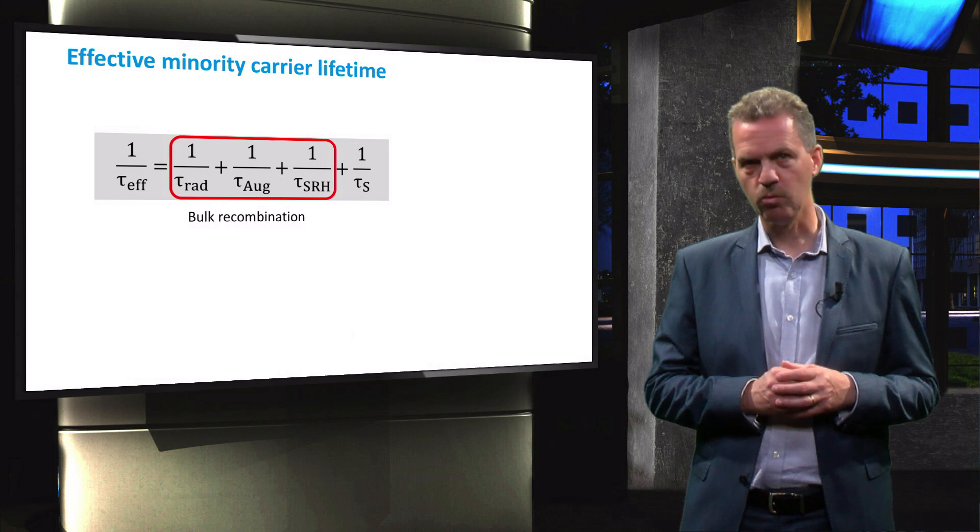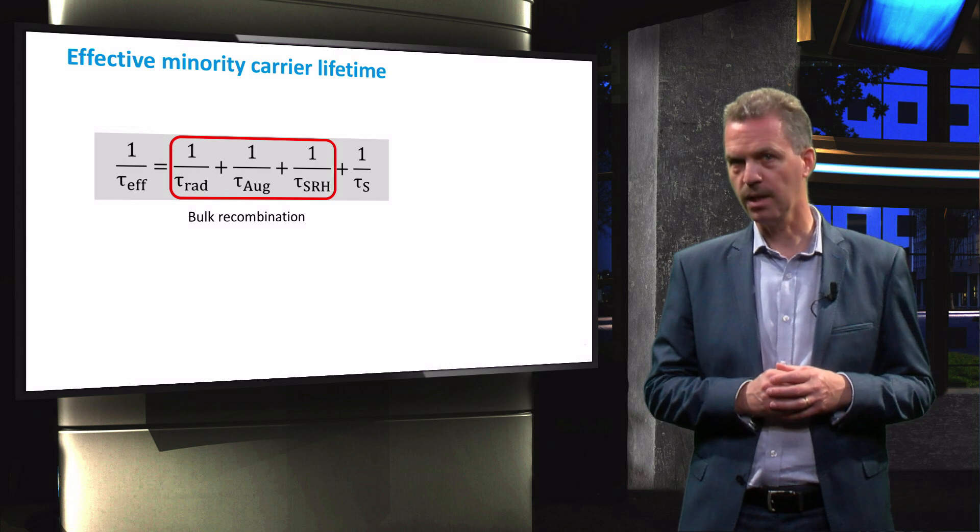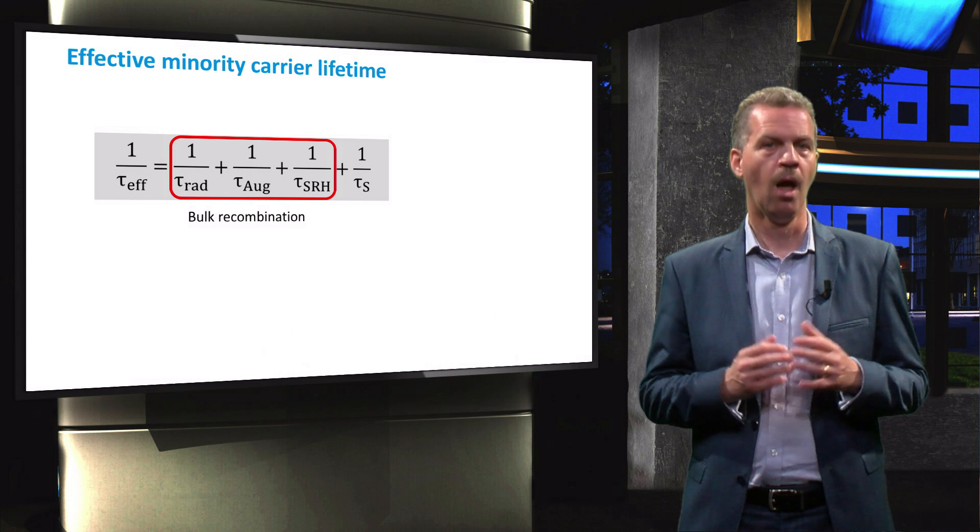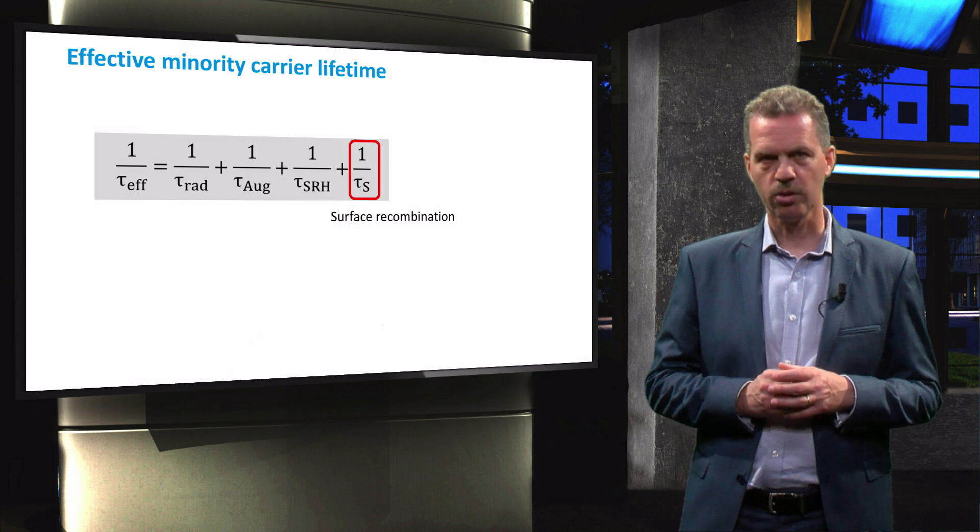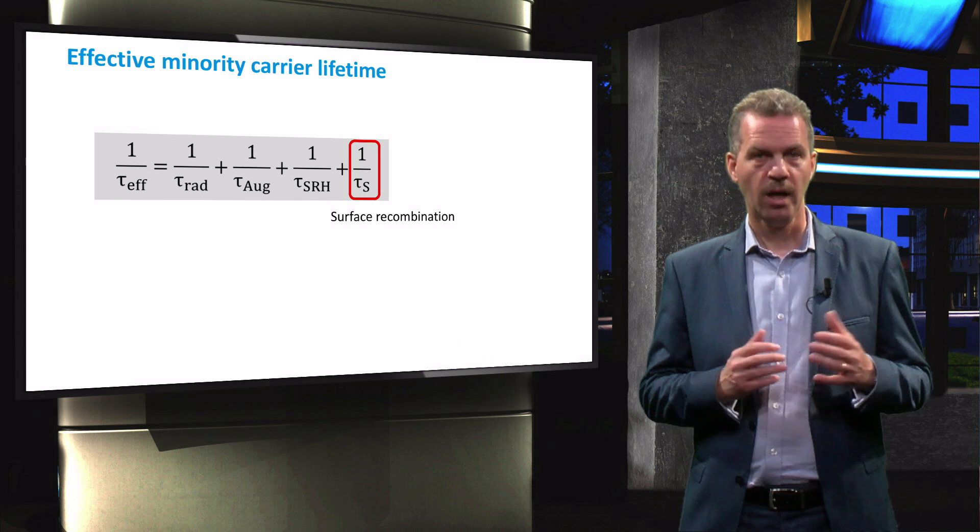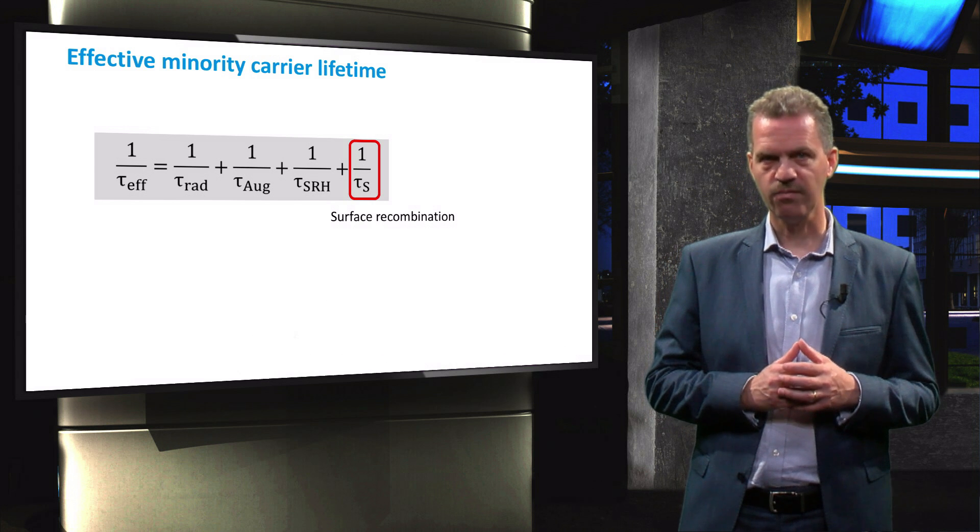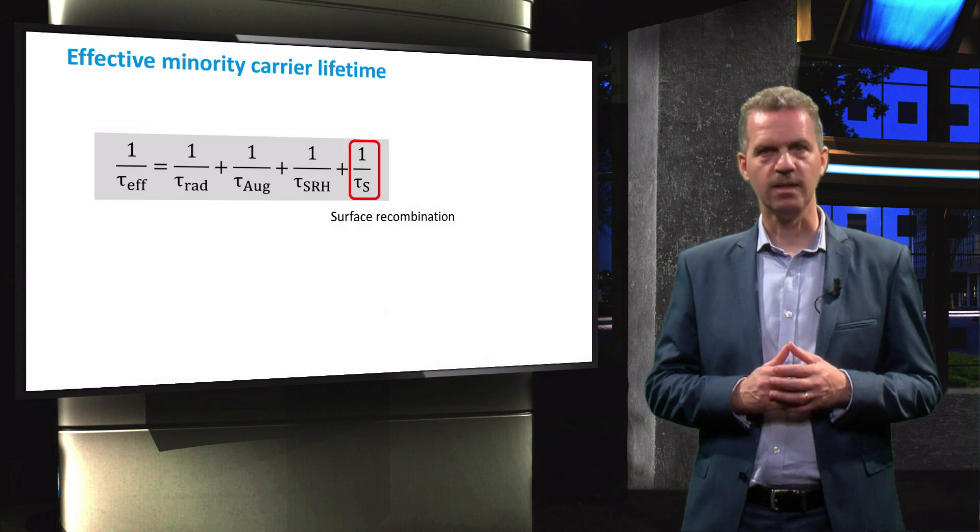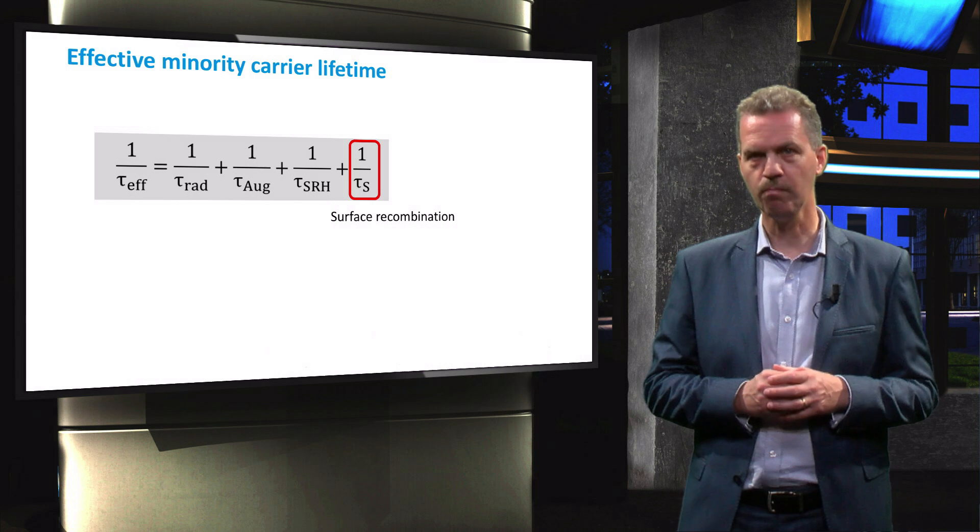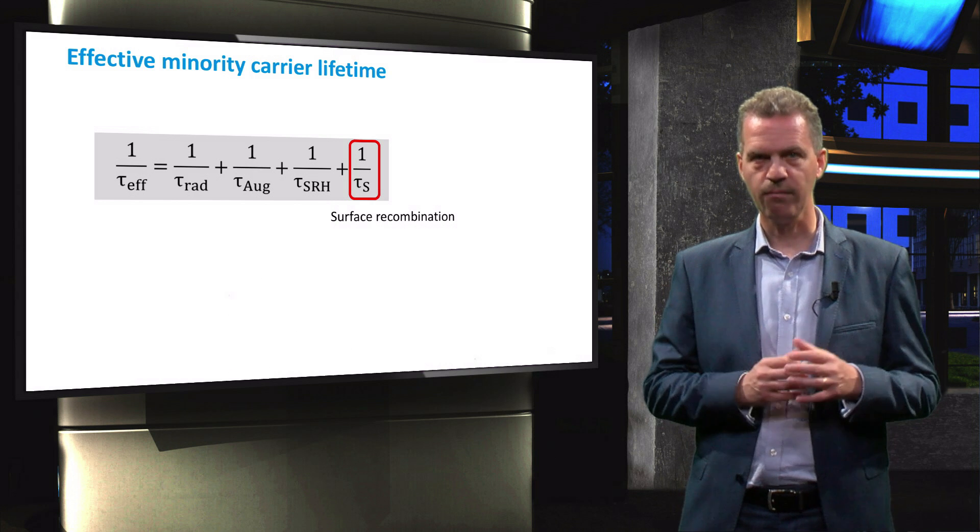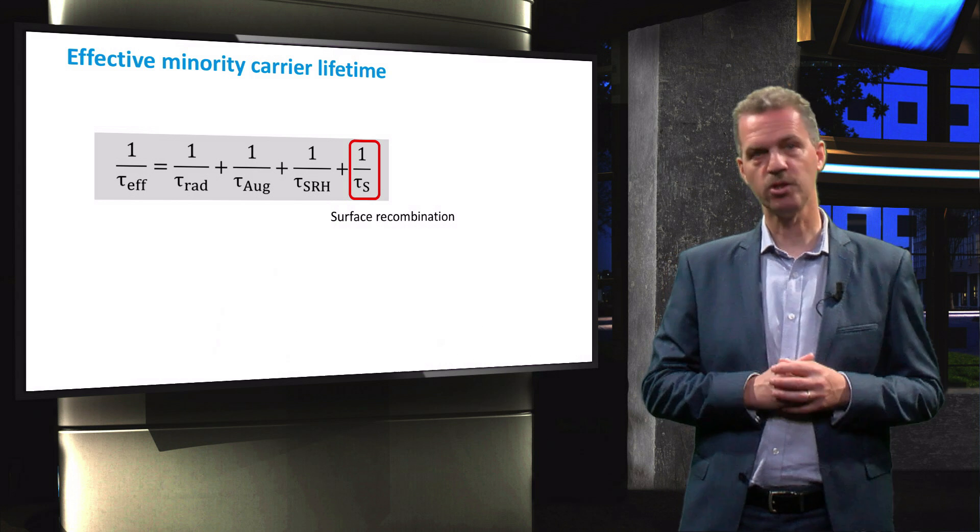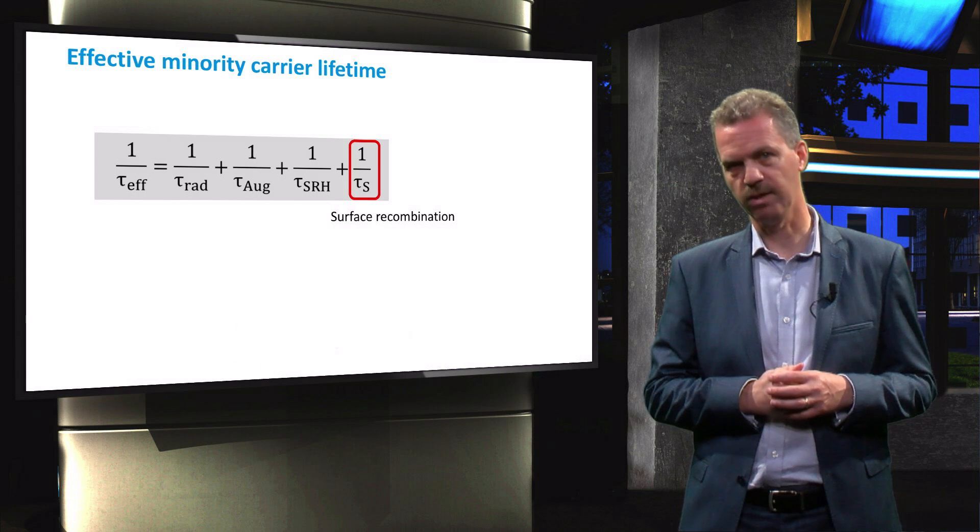Mechanisms contributing to bulk recombination are radiative, Auger and Shockley-Read-Hall recombination. Surface recombination occurs through defect states at the boundaries of the crystalline silicon lattice. The effective minority carrier lifetime is the lifetime that is measured being the sum of the inverse of each component lifetime. It is therefore a measure for the quality of the bulk crystalline silicon material and how well the surfaces of the wafer are passivated.